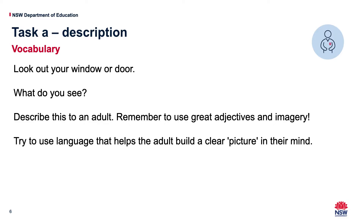What you need to use is great adjectives. So they're describing words - the colour of things. You can say blue, green, orange, whatever you see. But also use other more interesting adjectives to paint a picture in my mind. That word 'imagery' after adjectives there - imagery means the words you use to create a picture. You can see the word 'image' in there; image means picture. So have a think of all the different words and phrases you can use to describe what you see. The sky was as blue as the ocean - something like that. Try to use language that helps build a clear picture in our minds.